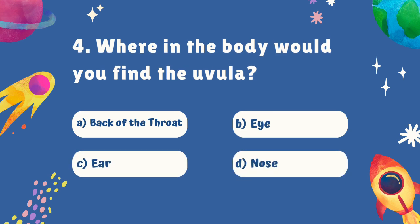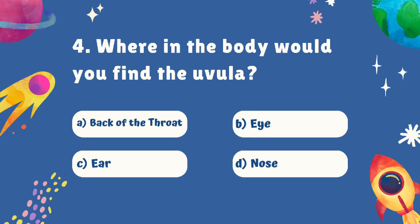Question number four. Where in the body would you find the uvula? Is it A. Back of the throat, B. Eye, C. Ear, or D. Nose? The correct answer is A. Back of the throat.